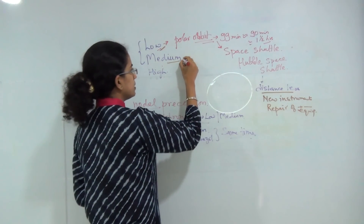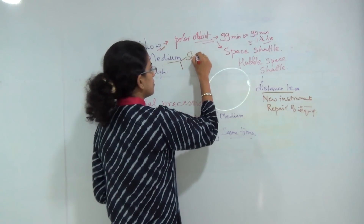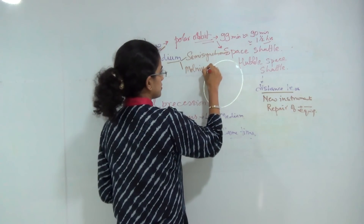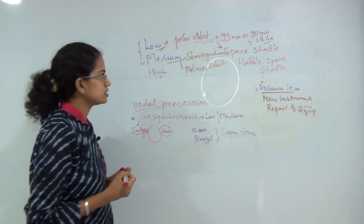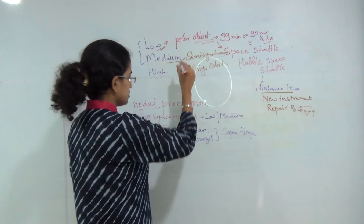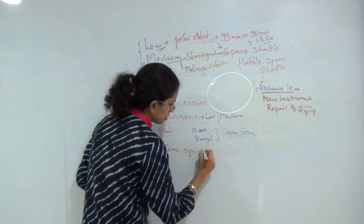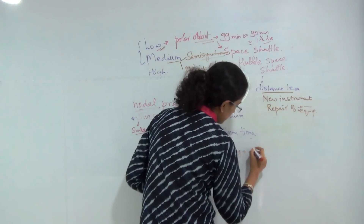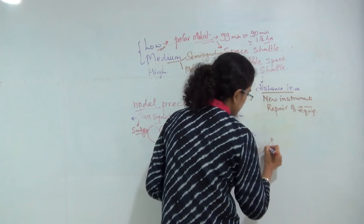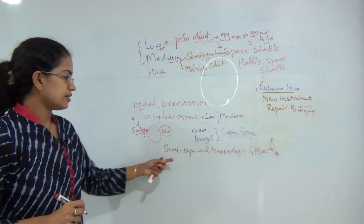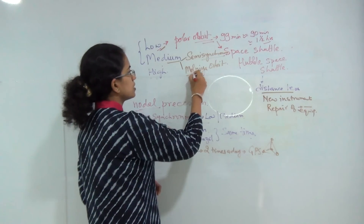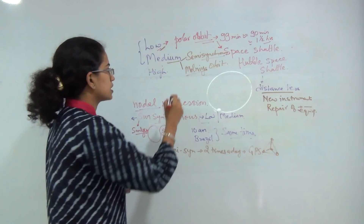Medium orbits are usually classified into two types: semisynchronous and Molniya orbit. Semisynchronous satellites pass over the same place on earth two times a day. A good example is GPS navigation devices, which require triangulation — you need three satellites in line to locate a position. Semisynchronous satellites cross the same position two times a day.